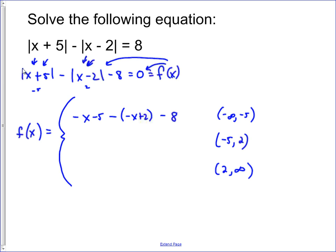Then we're going to look for the middle region. Well, if you pick zero out of that region, you can see that that one certainly is going to be positive, so we can just write x plus five. But the x minus two is going to be negative, and so we're going to have minus, and it's going to be the opposite, so negative x plus two, and then minus eight.